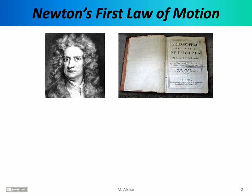Perhaps one of the most important figures in all of classical mechanics is the English physicist Isaac Newton. At the foundation of classical mechanics are three laws which today we refer to as Newton's laws of motion. Isaac Newton published these laws in a book whose Latin title is Philosophia Naturalis Principia Mathematica, which translates to Mathematical Principles of Natural Philosophy.